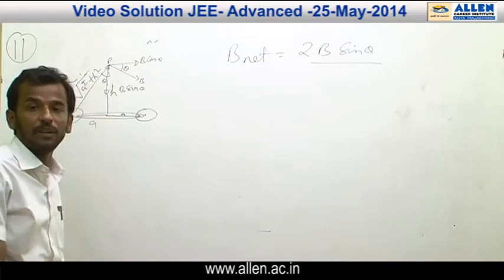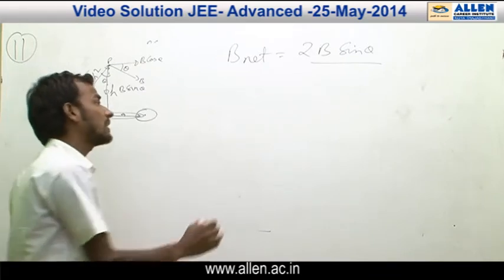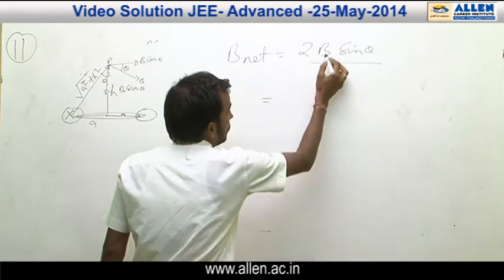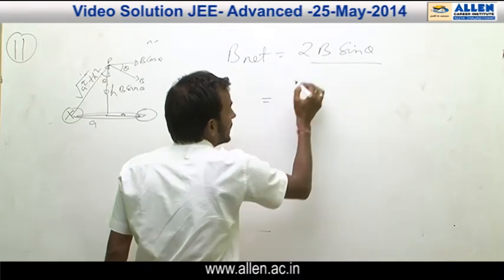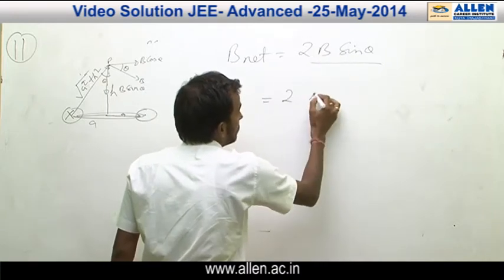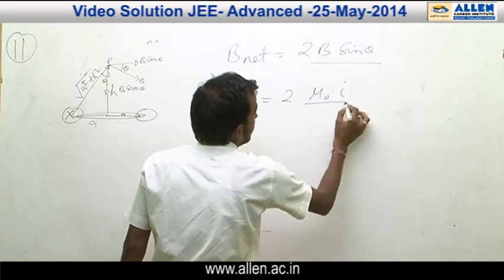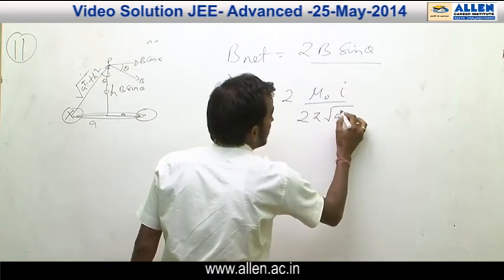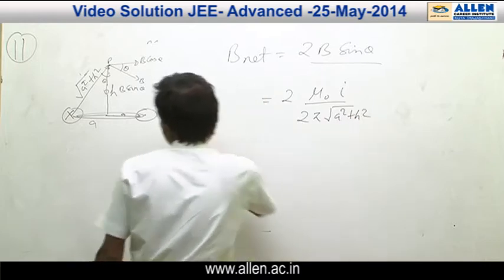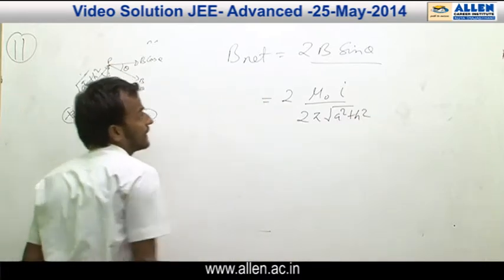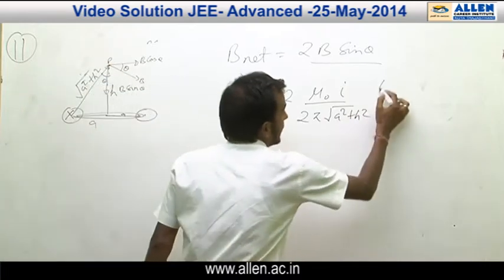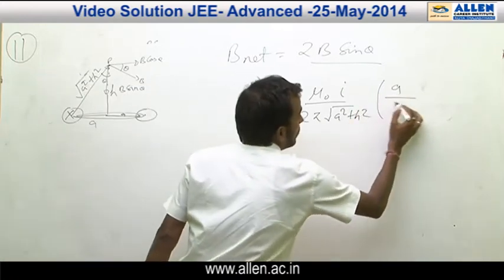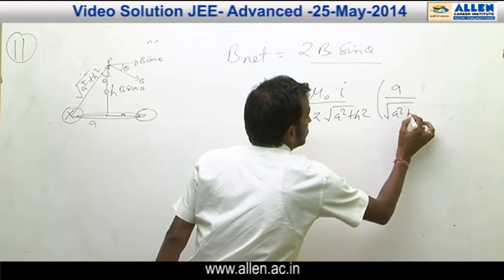The horizontal component of the magnetic field will be cancelled out. By replacing the value of B as μ₀I / (2π√(A² + H²)), where √(A² + H²) is the distance of the wire from point P, and sin θ = A / √(A² + H²).